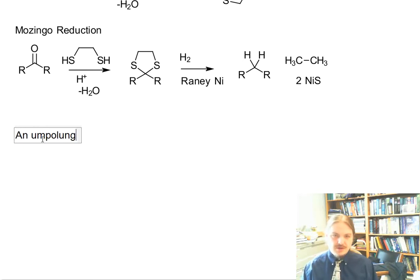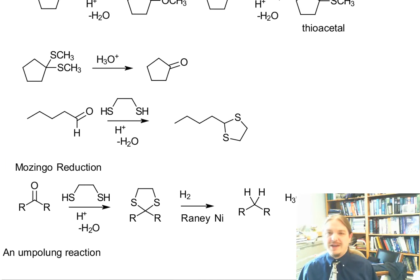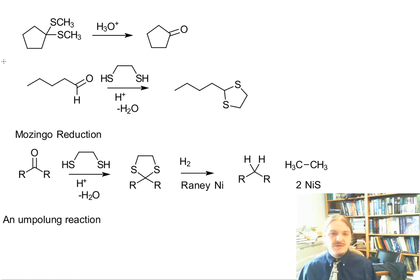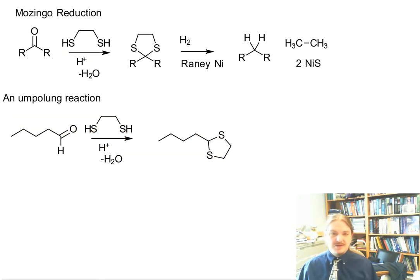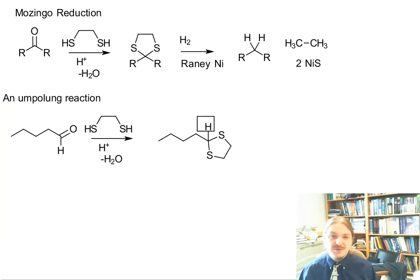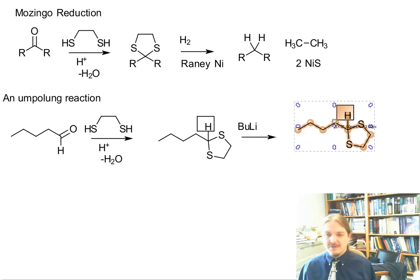Thioacetals are also interesting nucleophiles in something called an umpolung reaction. An umpolung is a case where you take something that was an electrophile and make it a nucleophile. It turns out that thioacetals made from aldehydes are kind of acidic — not super acidic, but kind of acidic at this position. Really strong bases like butyllithium can deprotonate that proton and make this dithianyl anion.